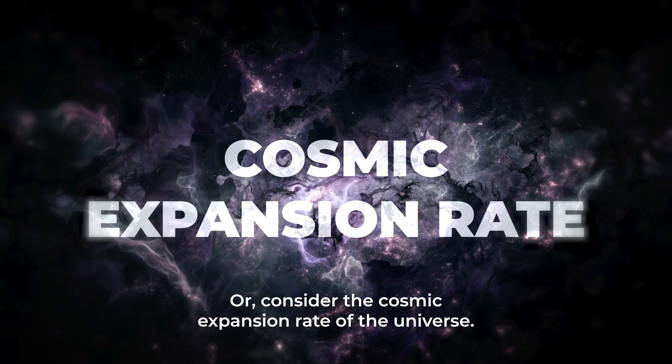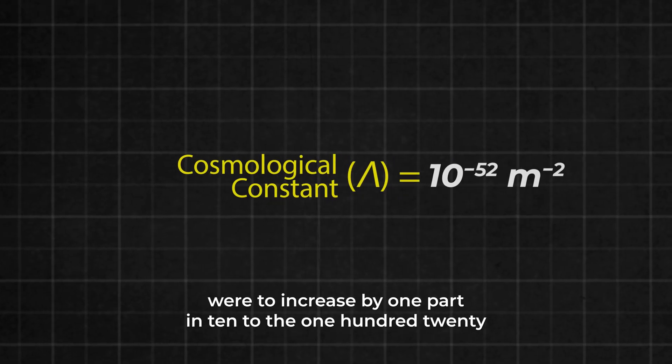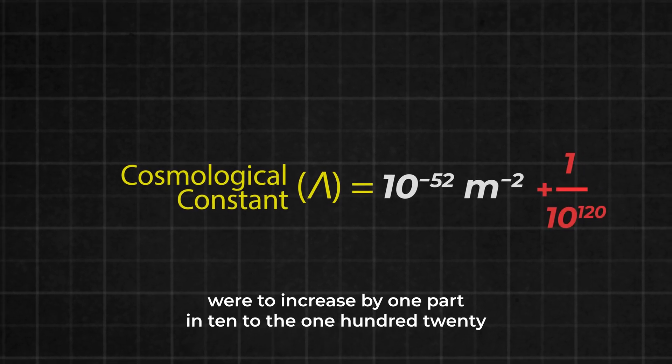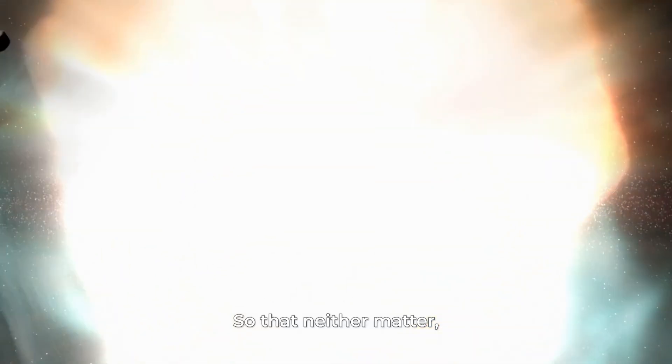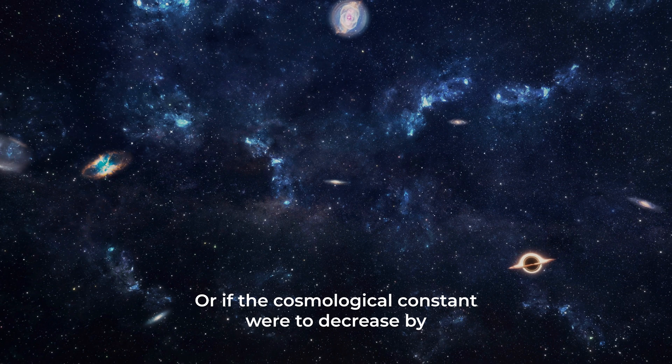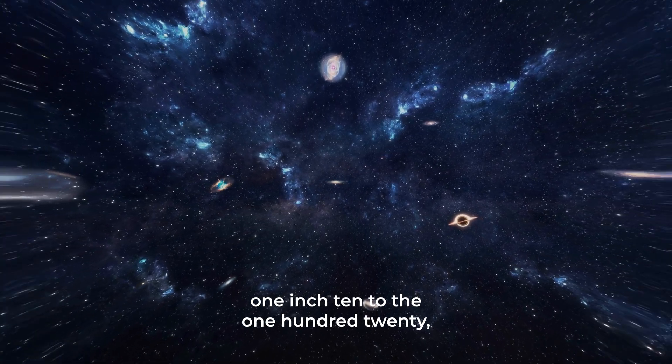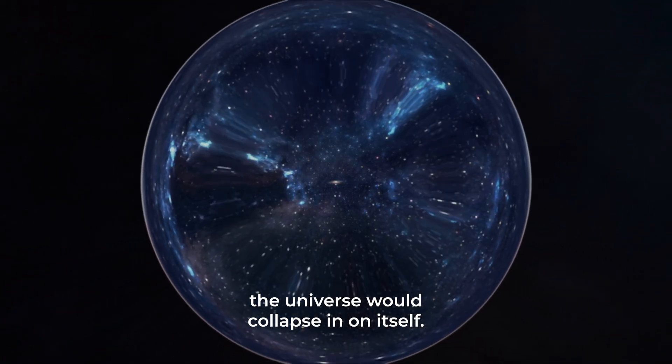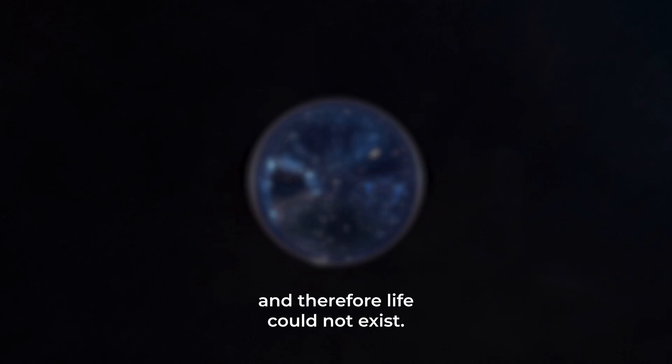Or consider the cosmic expansion rate of the universe. If the cosmological constant were to increase by one part in 10 to the 120, the universe would scatter all over the place, so that neither matter, nor stars, nor elements, nor life could form. Or if the cosmological constant were to decrease by one in 10 to the 120, the universe would collapse in on itself. Neither atoms nor stars could form, and therefore life could not exist.